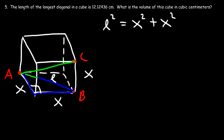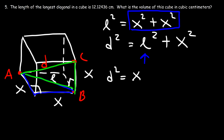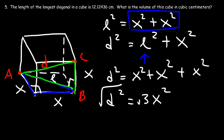Since l squared equals x squared plus x squared, we substitute into the second equation: d squared equals x squared plus x squared plus x squared, which is 3x squared. Taking the square root of both sides, the length of the space diagonal of a cube is the square root of 3 times the side length x. That's the key formula we need.